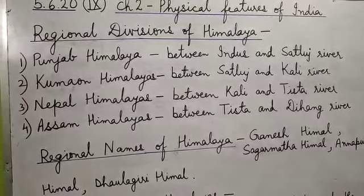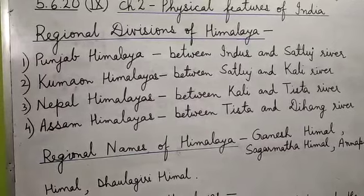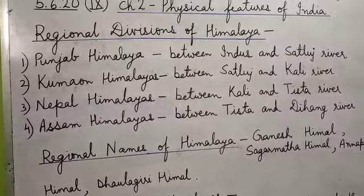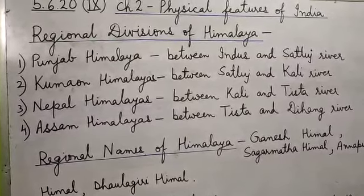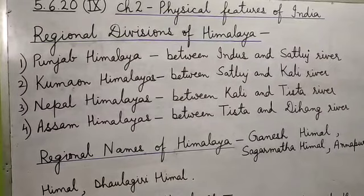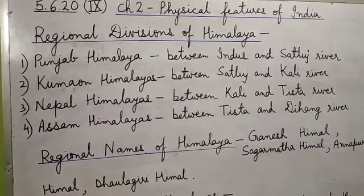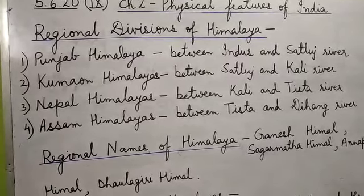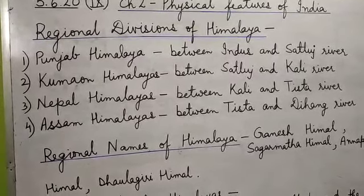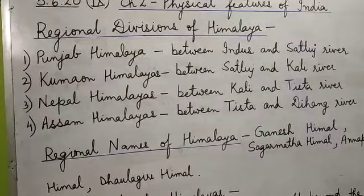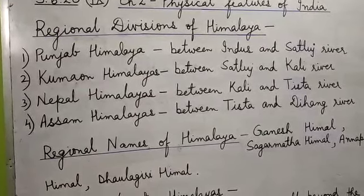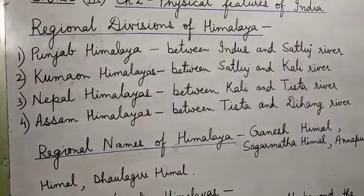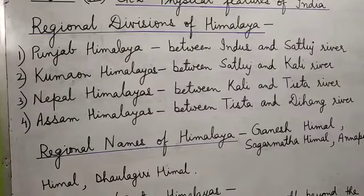So these divisions are the Punjab Himalaya, the Kumau Himalaya, the Nepal Himalaya, and the Assam Himalaya from west to east. The first one is Punjab Himalaya. The part of Himalaya which lies between Indus and Satlaj river is known as Punjab Himalaya. In Himachal Pradesh, this part is also known as Himachal Himalaya, and in Kashmir it is known as Kashmir Himalaya.